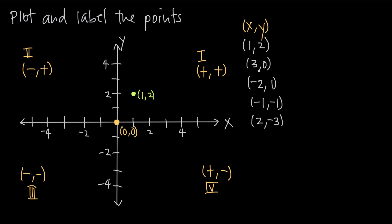What about (3, 0)? This is going to be x equals 3, y equals 0. So we come out a distance of 3 along the positive direction of the x-axis from the origin — 1, 2, 3, right here between 2 and 4. Then y is equal to 0, which means we stay right along the x-axis. We don't go up in the positive direction or down in the negative direction at all — we just stay right there. That's the point (3, 0).